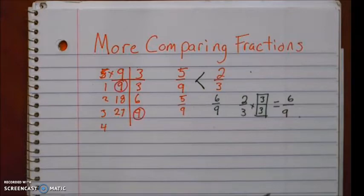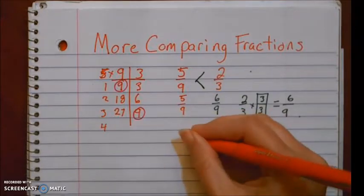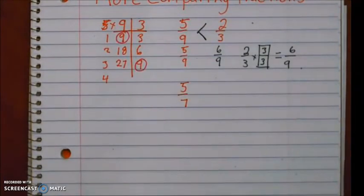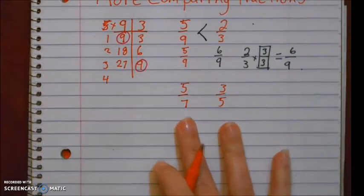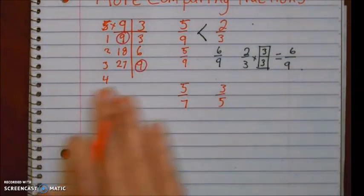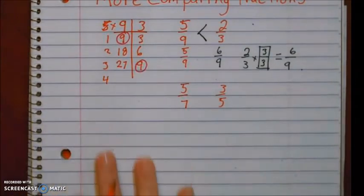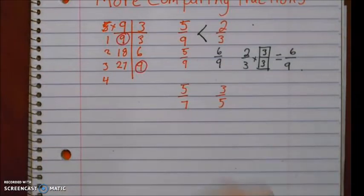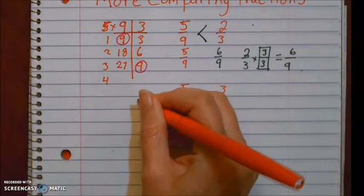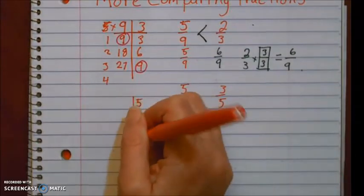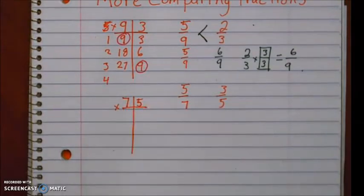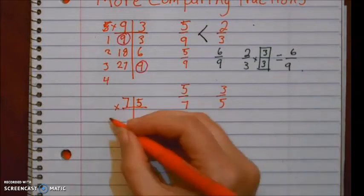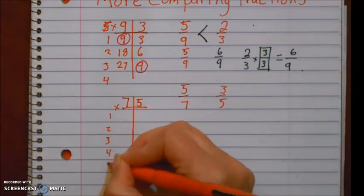Let's do five sevenths and three fifths. This is going to be a good one that you're going to want to use this strategy for because most of the times when they've got fraction bars for you, they're not going to have sevenths. But we can always take our denominators, five and seven, and start making our multiple chart.